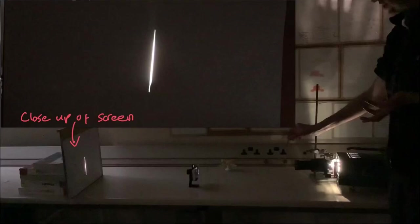To produce a nice spectrum from white light as a demonstration, the first thing you need to do is produce a clear image of a white slit, a white single slit on a screen.